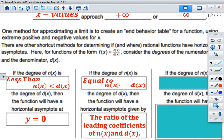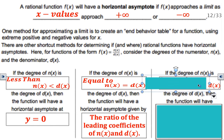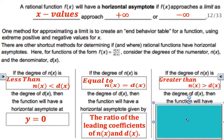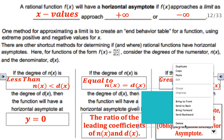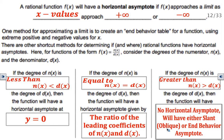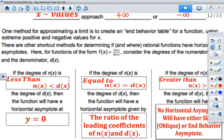The third possible outcome is if the numerator's degree is greater than the denominator's degree. Anytime that happens, you will not have a horizontal asymptote. What you will have instead is either a slant, oblique, or diagonal asymptote — sometimes also called end behavior asymptotes. I'm not going to show you how to find oblique asymptotes in this video; I just need you to be aware of all three possible outcomes. We'll cover that in another video.